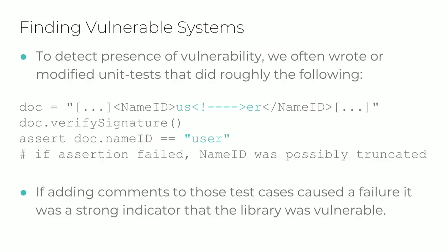I first identified this vulnerability during an internal audit of a proposed dependency. Once I identified a single instance, root cause analysis suggested it could be more widespread. Testing that hypothesis was quite efficient — with the help of a couple of other Duo researchers, we hunted down other open source SAML implementations to identify similar faulty behavior. Our main strategy was weaponizing existing unit tests: many open source SAML libraries included unit tests where at least one involved extracting a name ID from a canned signed SAML document. To test if a library was vulnerable, we merely needed to add a comment to such a test and ensure it still passed.